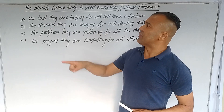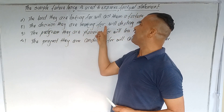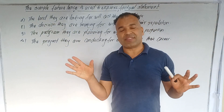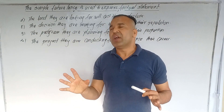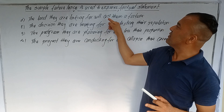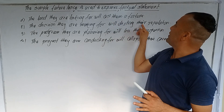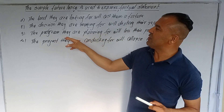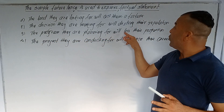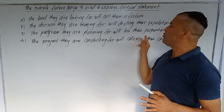Understand? The decision they are making for will destroy their reputation. This is the factual basis — you see: will cost, will destroy. The program they are planning for will lose their property. This is the factual basis.